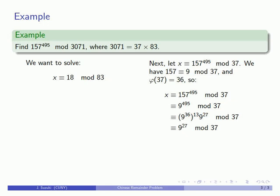9 to the 36th is 1 to the 13th, still 1. So this first factor drops out, and that's going to be 9 to the 27th. It turns out that 9 to the 27th is 1. So I have my second congruence. My value x is something that is simultaneously congruent to 18 mod 83 and 1 mod 37. At this point we can apply the Chinese Remainder Theorem algorithm.